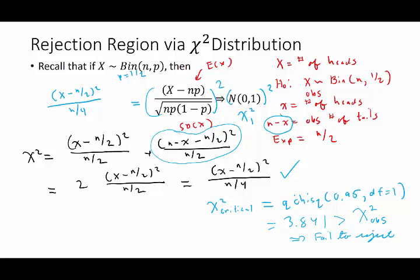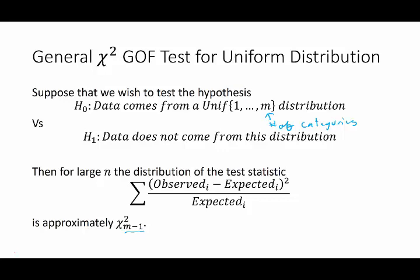because of the fact that the number of tails is defined by the total number of trials and the number of heads. This turns out to be the case no matter how many categories you have. You can always rewrite one of the m categories in terms of the other m minus one and hence you lose a degree of freedom from doing so. So that's why you always end up with number of categories minus one here.